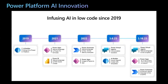In 2021, GPT-3 was announced by OpenAI, and we utilized GPT-3 for the first time in our platform to help citizen developers write formulas easily in Power Apps. This feature is now called Power Apps Ideas.